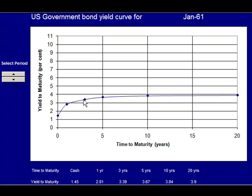This is a normal yield curve shape in January 1961 — the short rates are lower, and the expectation is that the economy will have some growth and therefore some risk of inflation, so the longer rates have to reflect that risk. Operation Twist began around here. Let's see what happens as I trawl through time — watch up here and watch what happens to these yields.